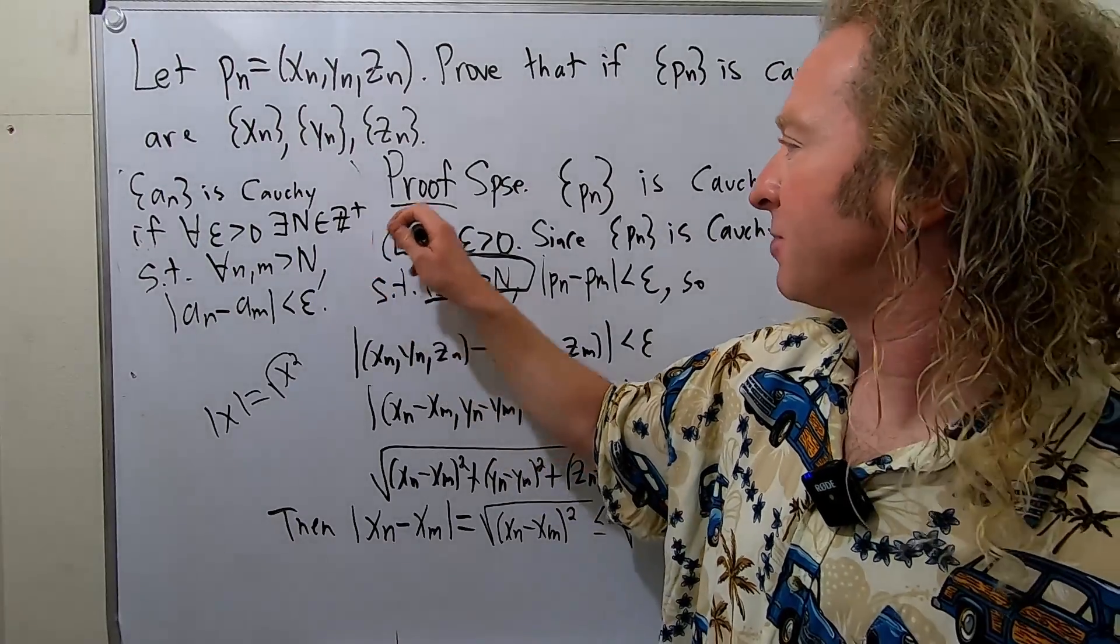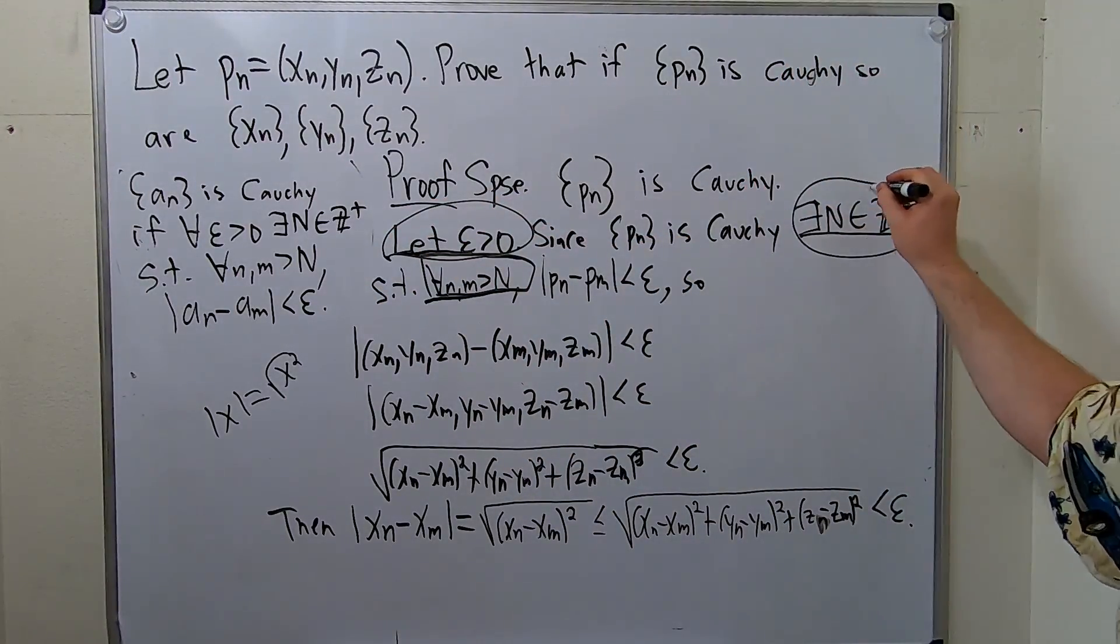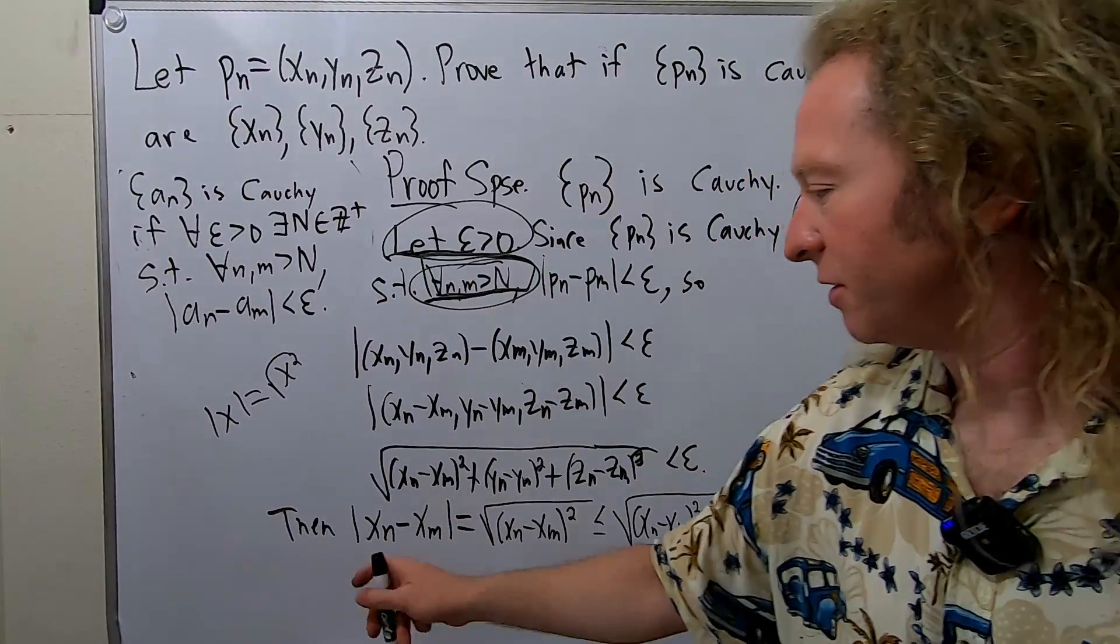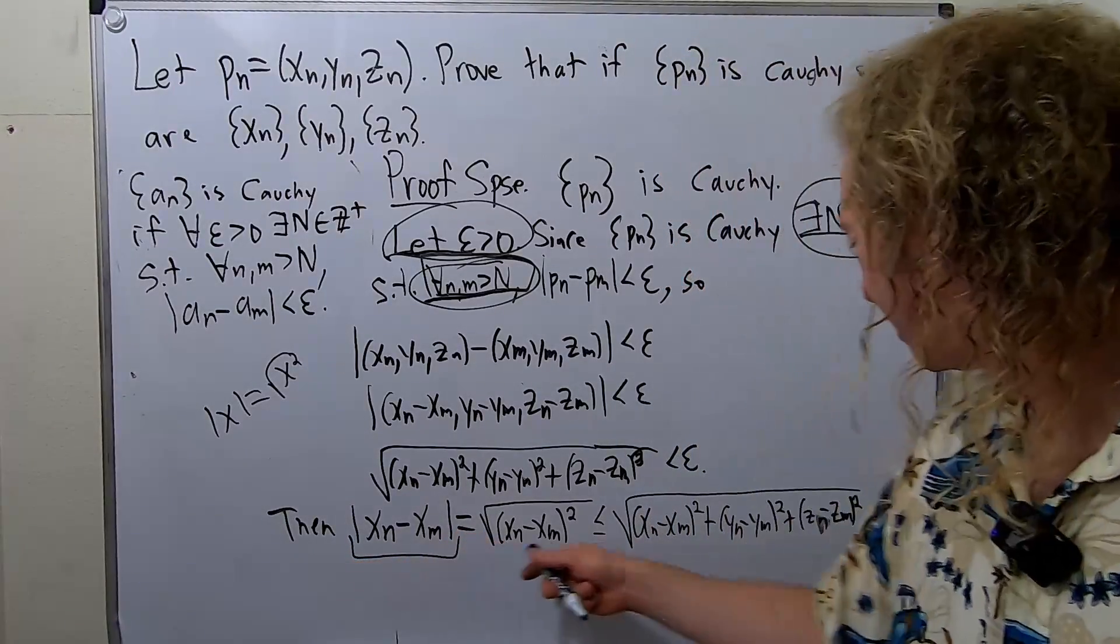And so for every epsilon greater than zero, we found a positive integer N. Such that for all little n and little m bigger than capital N, the distance between X sub n and X sub m is less than epsilon.